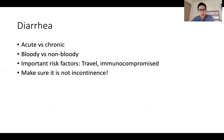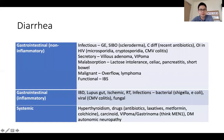Next, we move on to diarrhea. This is something we see commonly and can be approached from whether it's acute or chronic, or bloody versus non-bloody. Important risk factors not to miss in history taking include travel, and whether there are risk factors for an immunocompromised host — be it retroviral disease or immunosuppressive medication. It's also important to ensure that diarrhea is not due to incontinence. I think of it in terms of whether it's GI or systemic, and for GI causes, whether it's non-inflammatory or inflammatory.